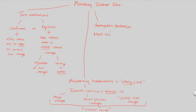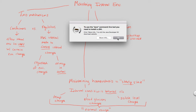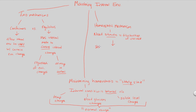A homeostatic mechanism needs a stimulus — a fluctuation or change of a variable, such as temperature rising. That's the stimulus. The homeostatic response begins with a sensor that detects that stimulus. Once the body detects that the temperature set point has fluctuated, the animal responds, and the system goes back to the set point.